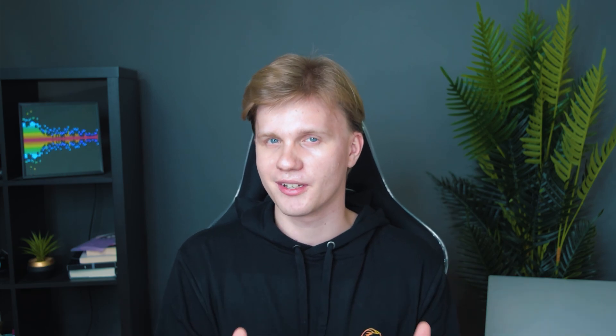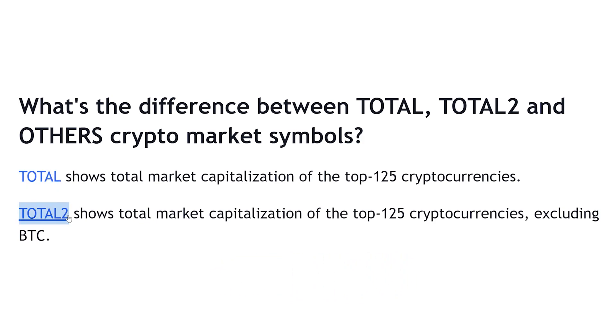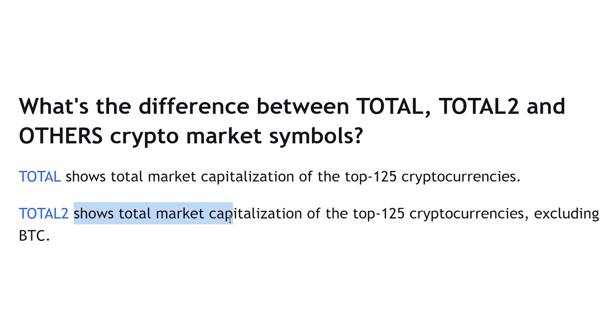The third chart I want to share is actually a group of charts: Total and Total 2. The first one shows the total market capitalization for the top 125 cryptocurrencies, while the second one displays the market cap for the top 125 coins excluding Bitcoin. I mostly use the second option for analyzing the altcoin market. It is quite similar to Others' Dominance, but what I really like about Total 2 is that you can use it on daily timeframes and react faster.